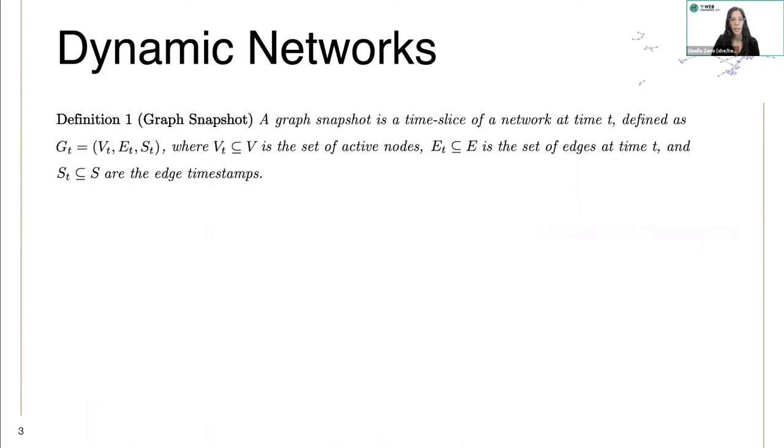In dynamic networks, a graph snapshot is a time slice of a network at time t. Here in the first snapshot, edges are the gray connections, active nodes are colored in blue, and white nodes have not joined the network yet.